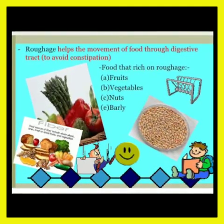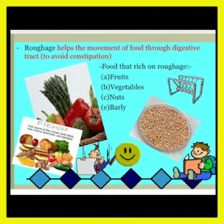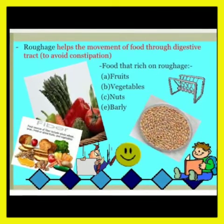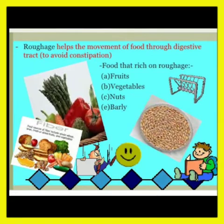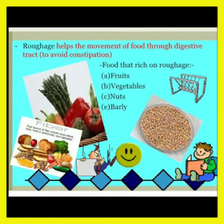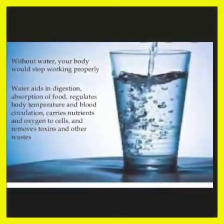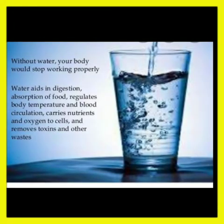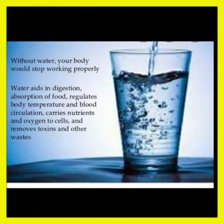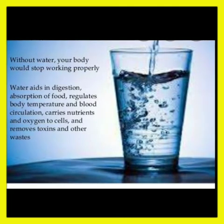The next component is roughage. Roughage is the fibrous content in food. It helps us get rid of undigested food. Some sources of roughage are grains, green vegetables, and fruits.